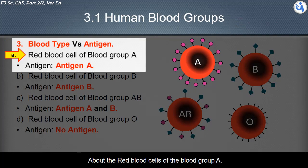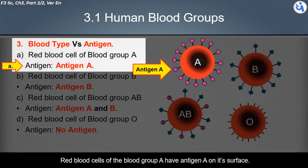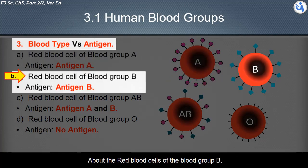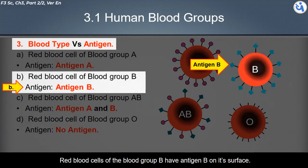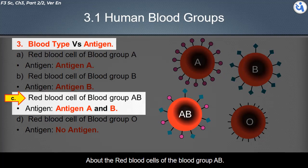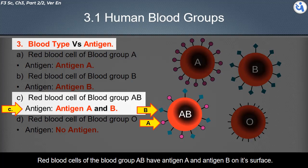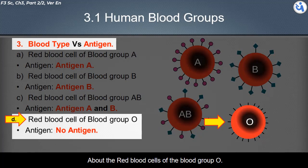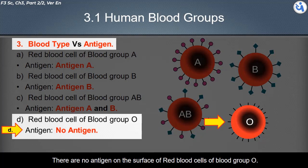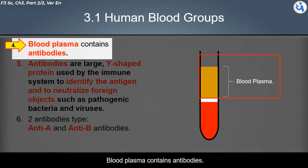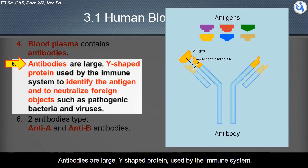Red blood cells of blood group A have antigen A on their surface. Red blood cells of blood group B have antigen B on their surface. Red blood cells of blood group AB have both antigen A and antigen B on their surface. Blood group O red blood cells have no antigen on their surface.